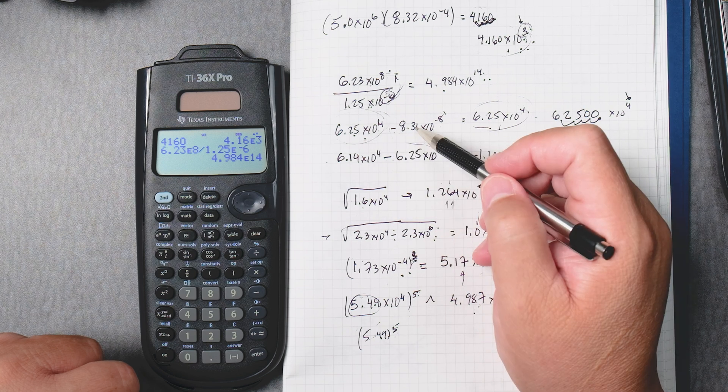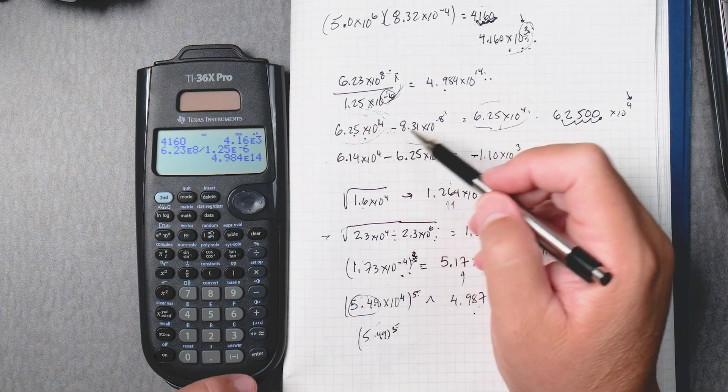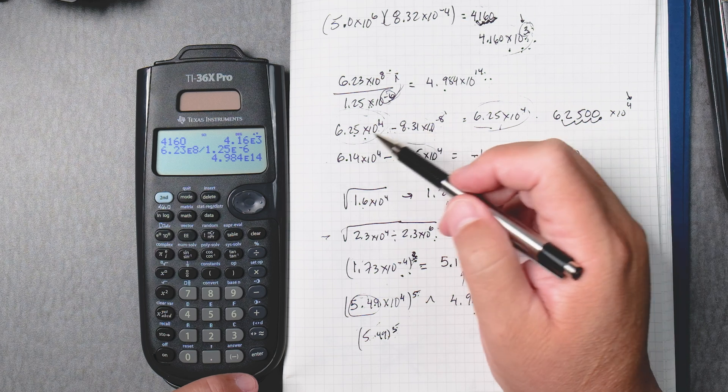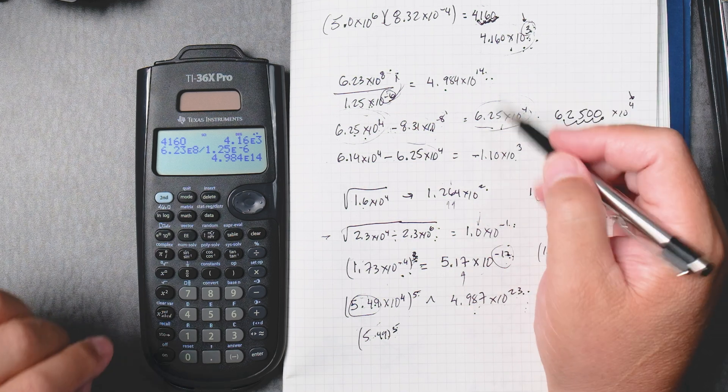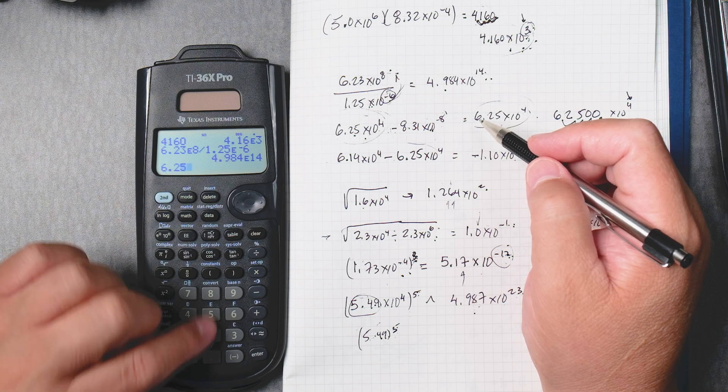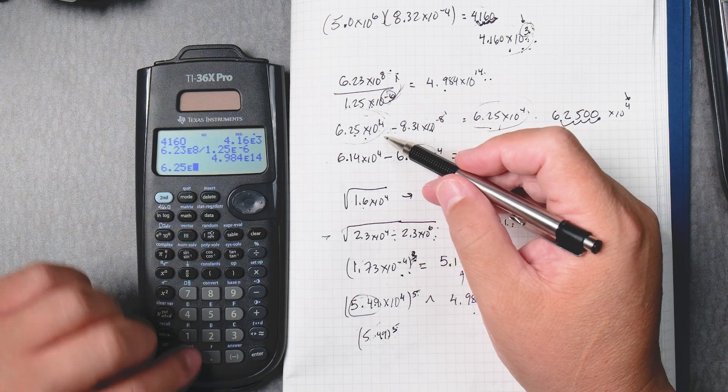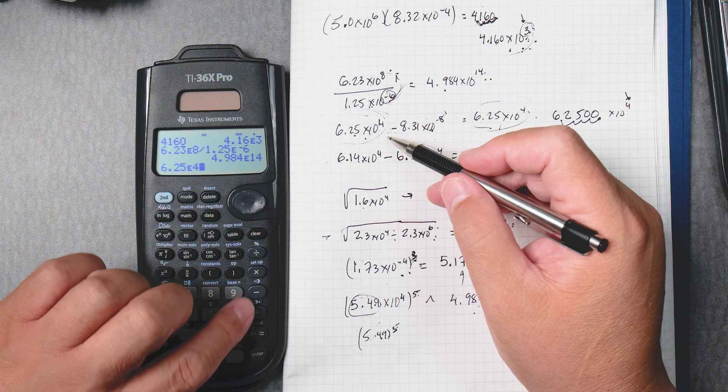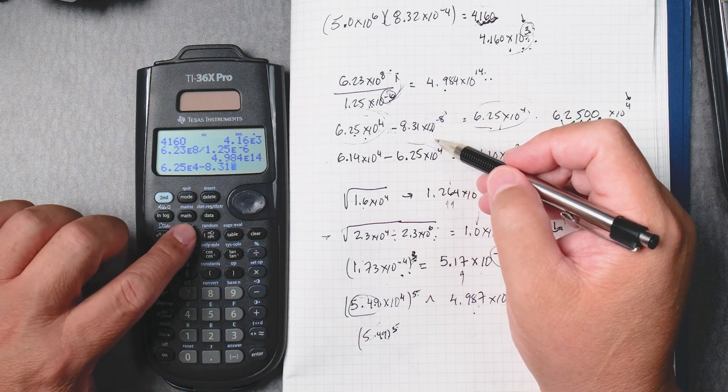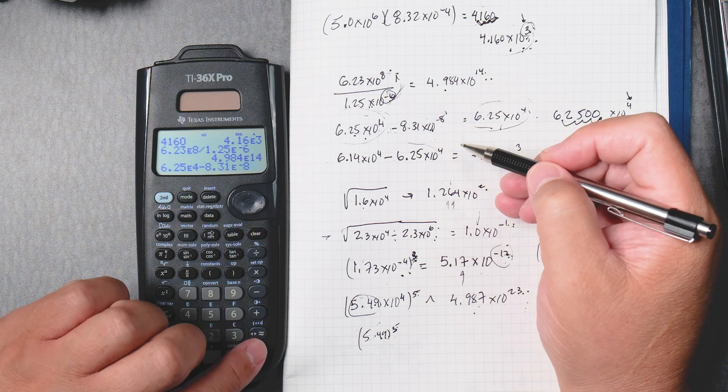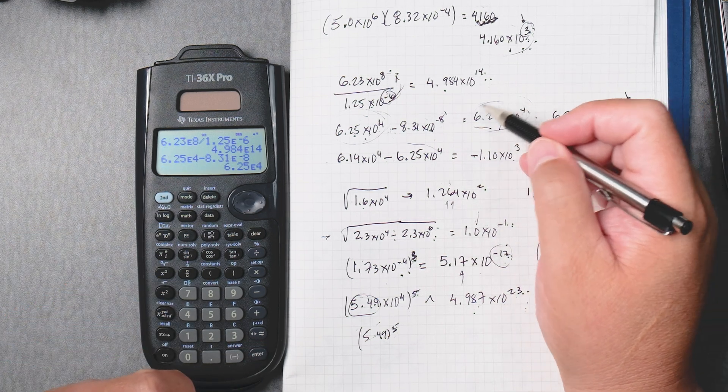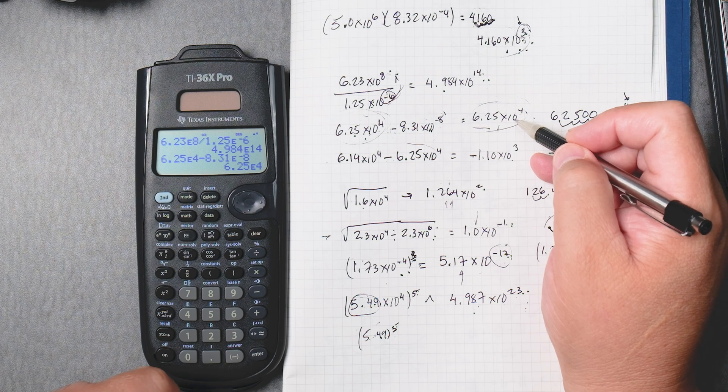Let's subtract these two here. This is a very big number, this is a very, very small number. When you subtract a small number from a big number, it gives you the same answer in scientific notation. So, 6.25 double E to the fourth, subtract 8.31 to the power of negative 8, enter, 6.25 times 10 to the fourth. As you can see, it's the same number that we input.